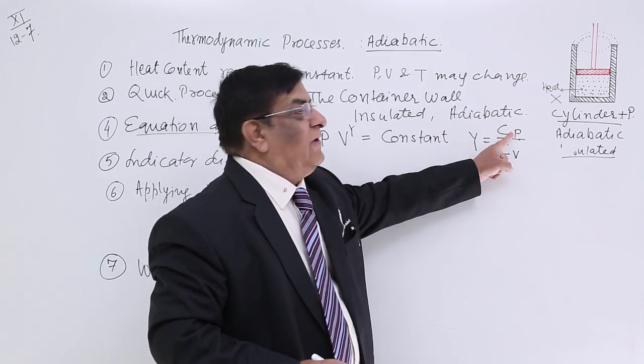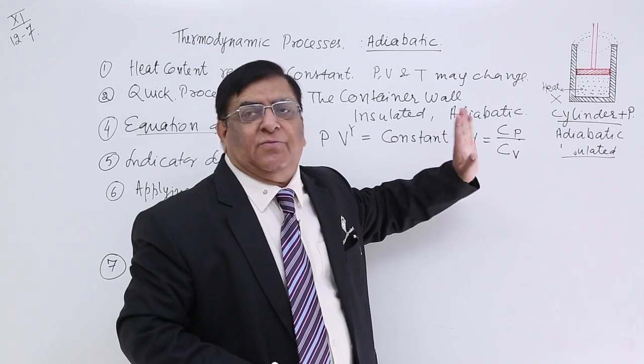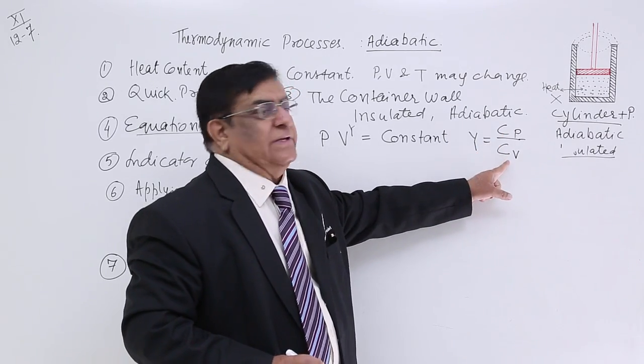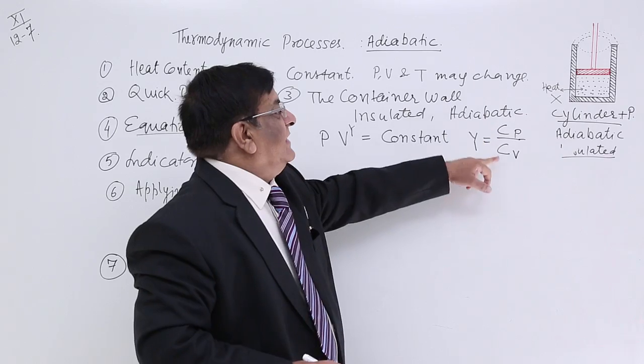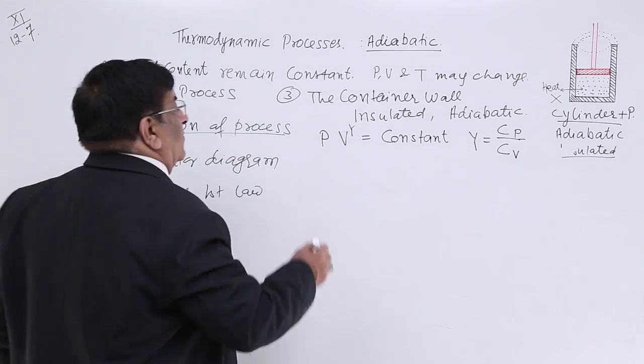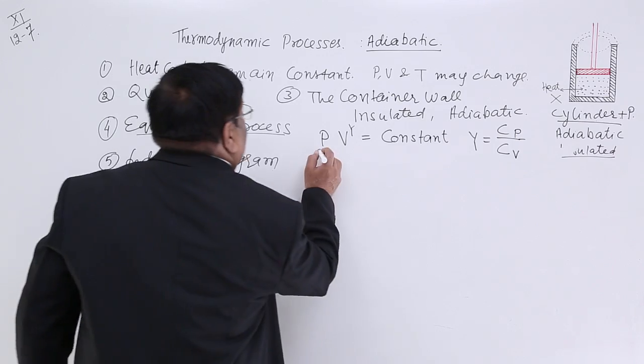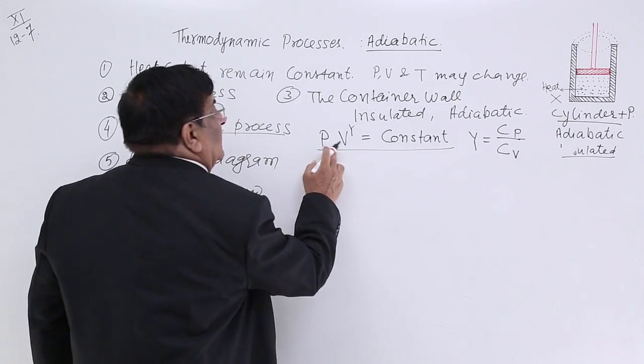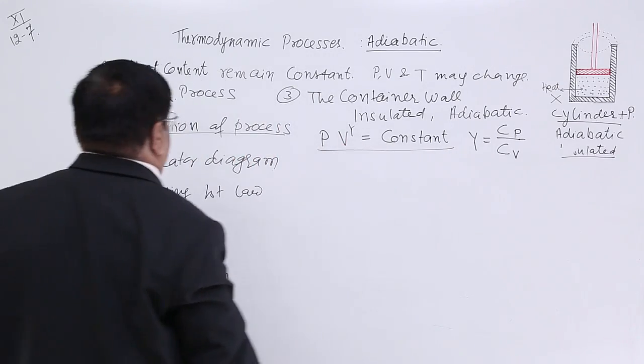and that is a constant for every gas. For diatomic gas, there is one value of Cp upon Cv. For monoatomic, one. For triatomic, there is one. And, this ratio gives gamma. So, the equation for adiabatic process is P, V to the power gamma is constant. Then, indicator diagram.